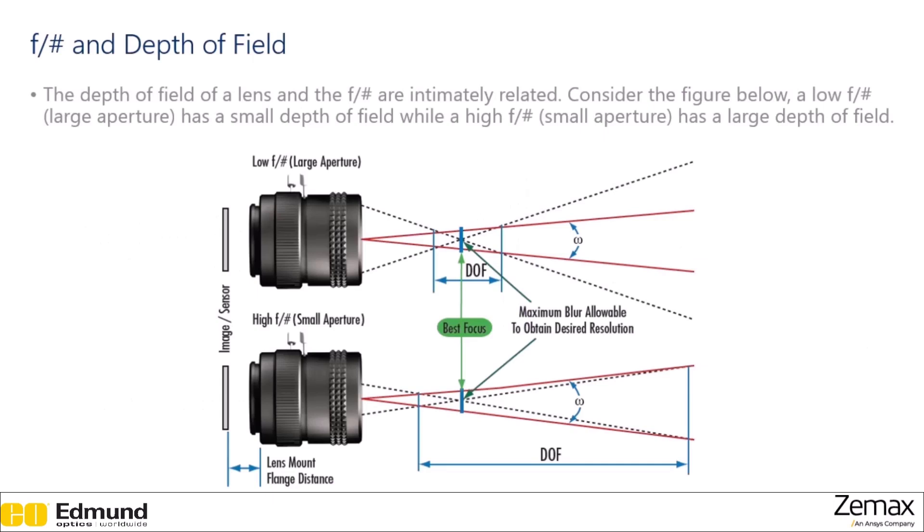F number is related to a lot of different parameters. In particular, your depth of field will change with your F number. So if we consider this image below, let's say we have a low F number, which means a large aperture means light is able to get into your camera from a wide variety of angles. And this limits the depth of field that you are able to see. Whereas if you have a small aperture or a high F number, the light's only able to get in in a smaller range of angles, so a smaller region of the lens, this gives you a larger depth of field.